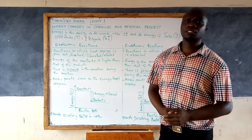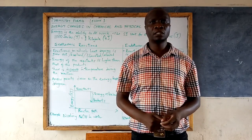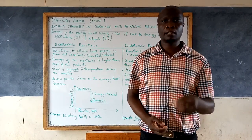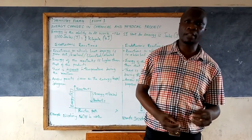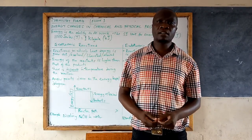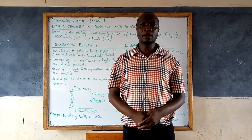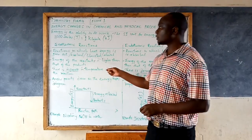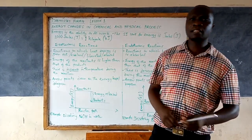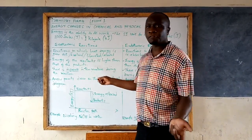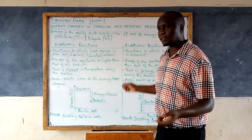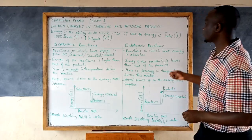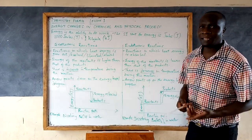During reactions, whether chemical or physical, energy is either given out or it is taken in. This leads to two types of processes: one we call exothermic and the other we call endothermic. An exothermic reaction is a reaction in which heat energy is given out — it is evolved, liberated, or released. While in an endothermic reaction, heat energy is absorbed or taken in.